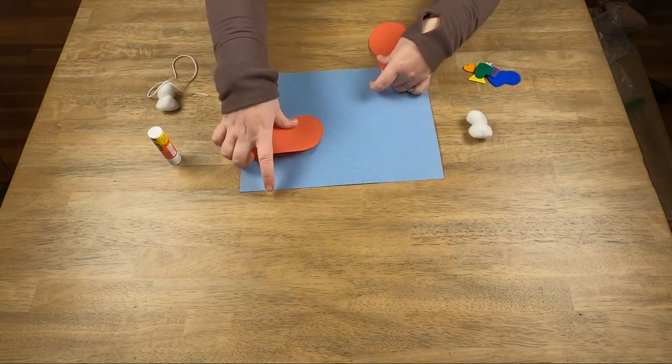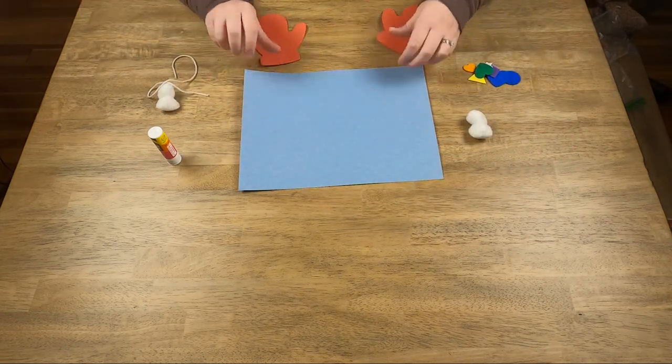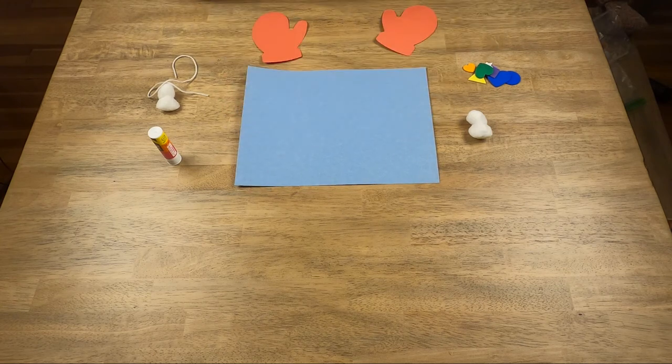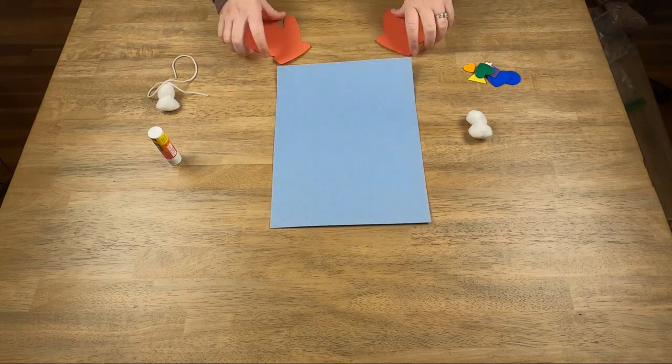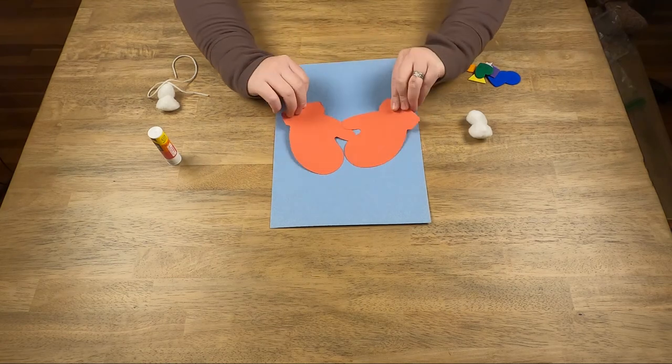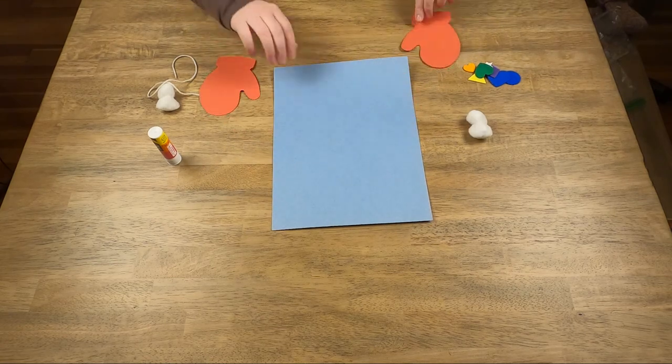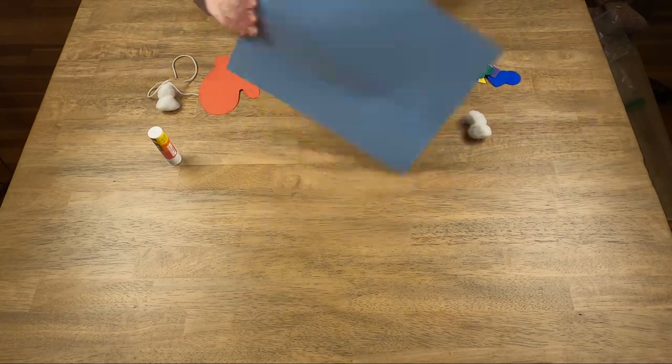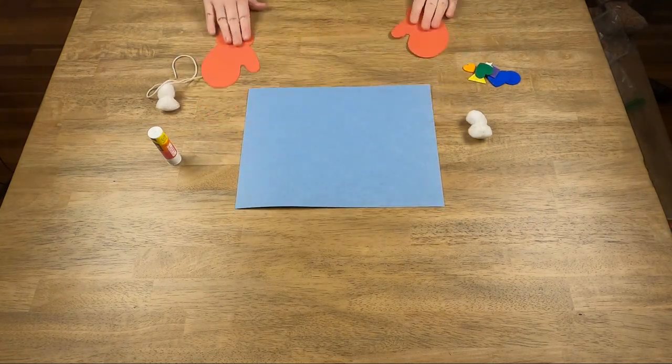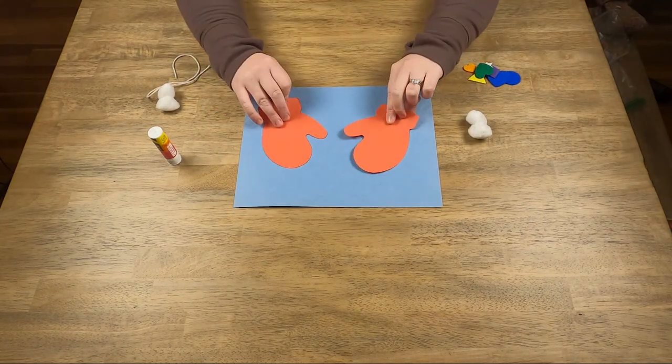Once I have all my supplies out, I'm gonna spread it out so that you can see. I'm gonna start with my mittens and glue them down to my blue background. If you prefer your background to look like this, you can do it up and down, or if you like the wide frame you can go side to side.